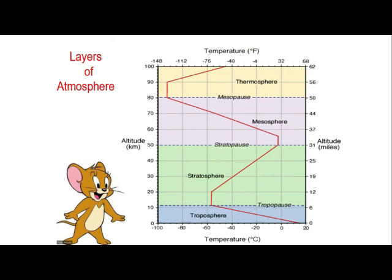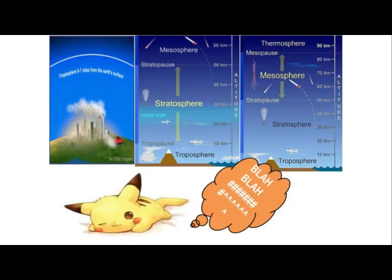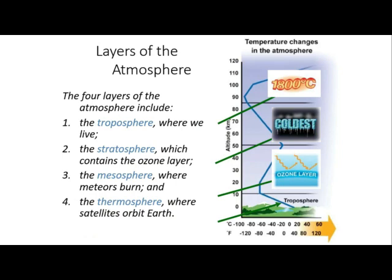To have a summary, the layers of the atmosphere from bottom to top are: the troposphere, stratosphere, mesosphere, and lastly the thermosphere. Some scientists would actually include the exosphere as the last part after the thermosphere. The troposphere is where we live, the stratosphere contains the ozone layer, the mesosphere is where meteors burn and is the coldest part, and the thermosphere is where our satellites orbit the Earth — and it is the hottest part.